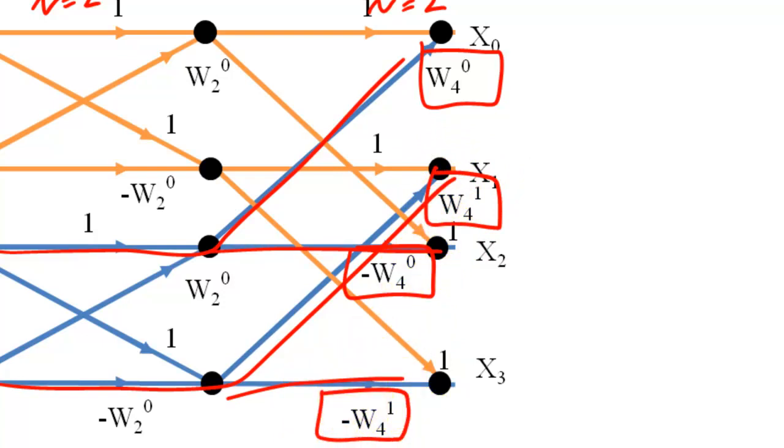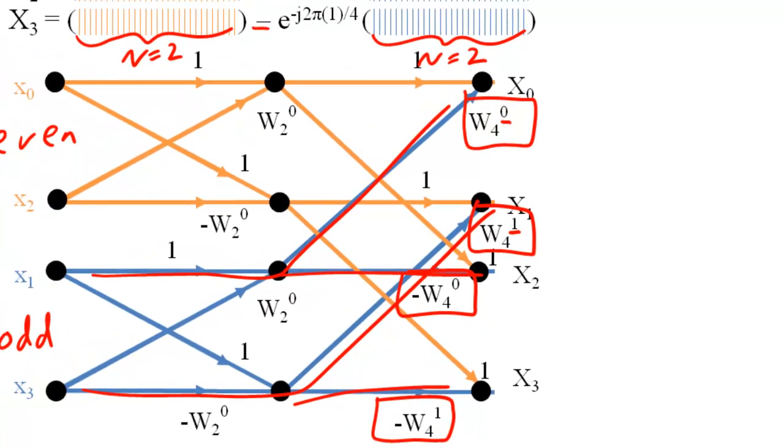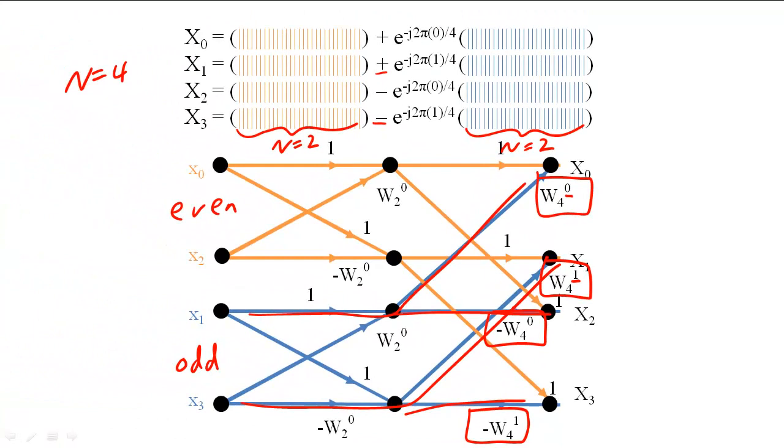Notice how the four-sample butterfly has W sub n's with powers ranging from 0 to 1. We get this by dividing 4 by 2 and then subtracting 1 because we index from 0 to 1. Based on this calculation, the four-sample DFT requires only eight multiply accumulates.